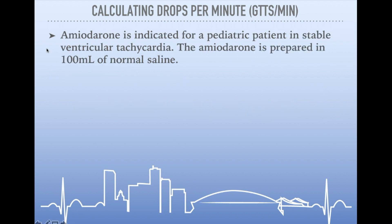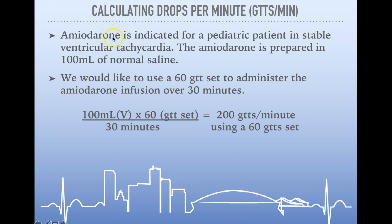Let's look at one more. We have an amiodarone infusion indicated for a pediatric patient in stable ventricular tachycardia. The amiodarone has been prepared in 100 milliliters of normal saline. We'd like to use a 60-drop set to administer the amiodarone infusion over 30 minutes. Setting our formula up: 100 milliliters multiplied by 60 (our drop set), divided by 30 minutes — that gives us 200 drops per minute using a 60-drop set.